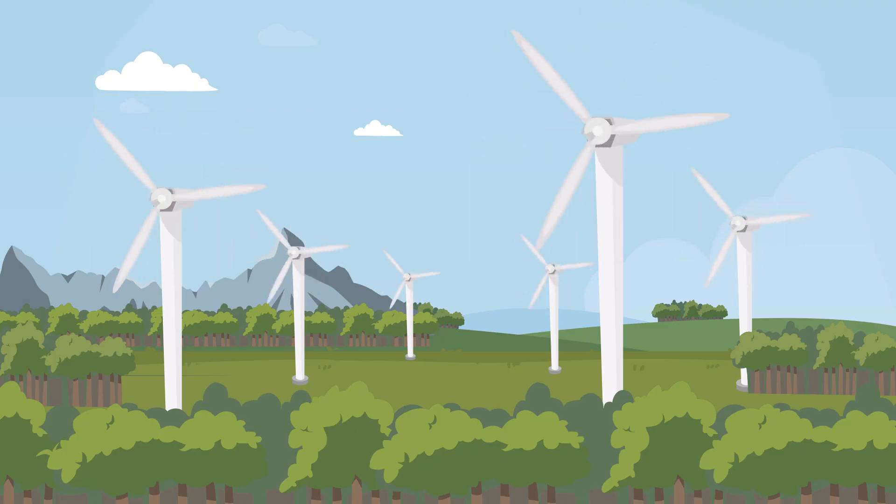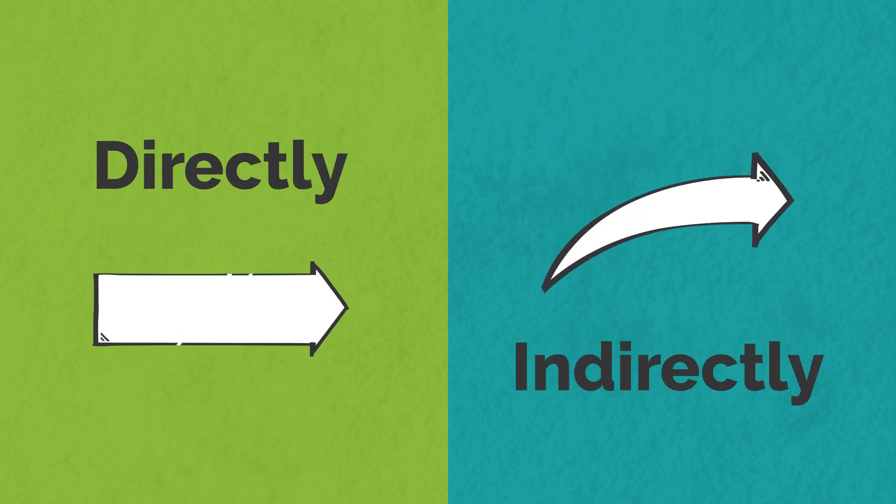Agriculture consumes large amounts of energy for food production. Farms consume energy both directly and indirectly. Each energy source has trade-offs.